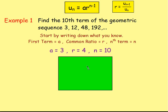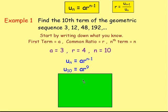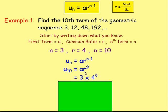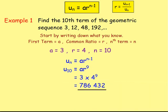Therefore, to work out the tenth term, you would have the formula u(n) equals a times r to the n minus one. Because it's the tenth term, you'd have u10 equals a times r to the power of 10 minus 1, which is r to the 9. So it's a times r to the 9. From there you can substitute your values: a is 3, r is 4, so that's 3 times 4 to the power of 9. Put that into your calculator and it gives you an answer of 786,432.